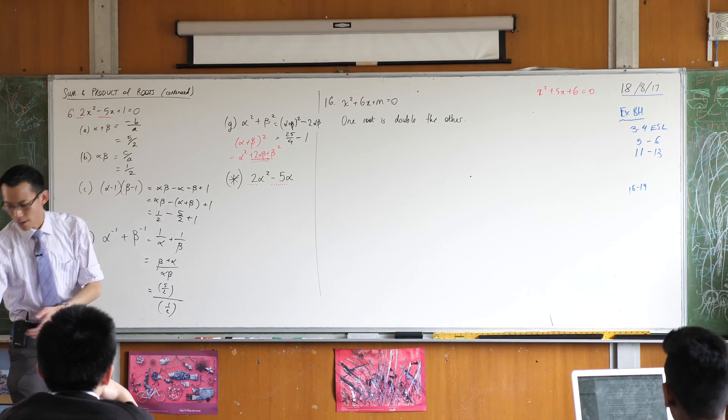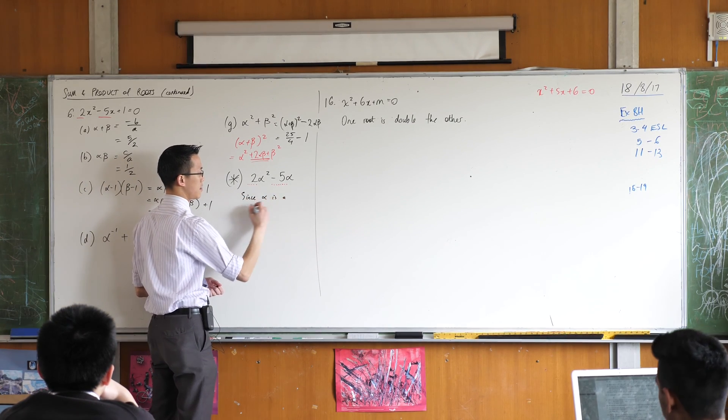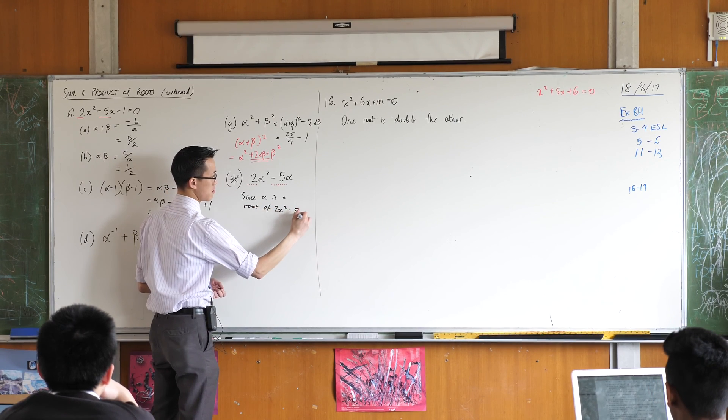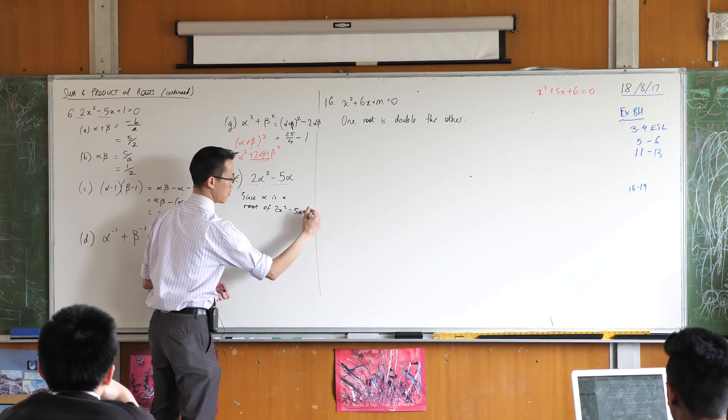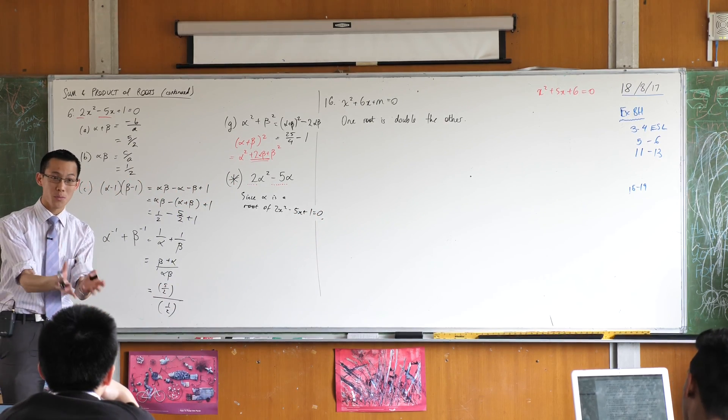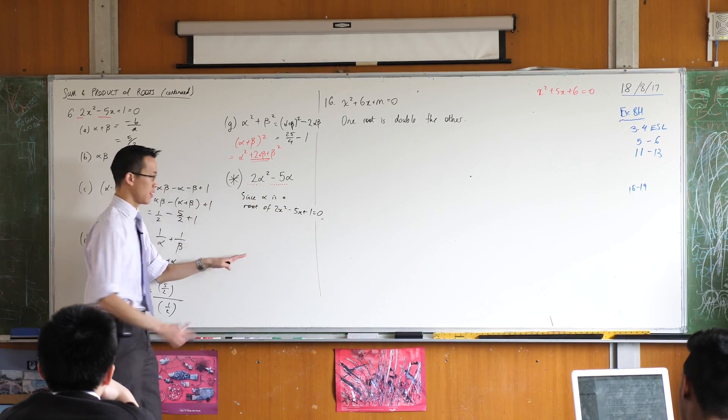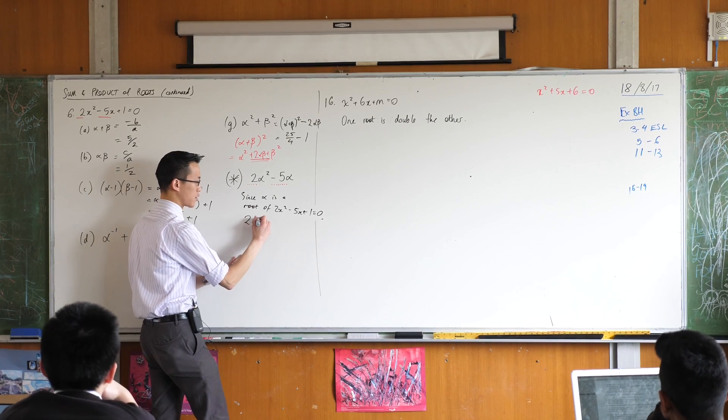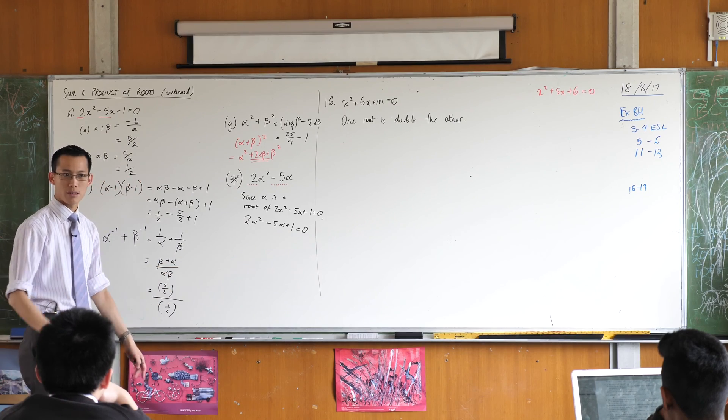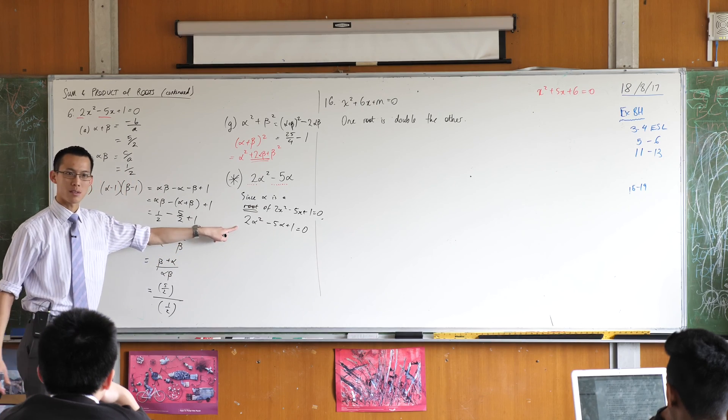So therefore I can infer, and this is the way that I would write it, I would say since alpha is a root, what did I just say? Plus 1. Right? Since it's a root, what it means to be a root is it satisfies this equation. Does that make sense? So therefore 2 alpha squared minus 5 alpha plus 1 is 0. Are you okay? Do you see how this just gets at, well that's that's the definition of what a root is, right?